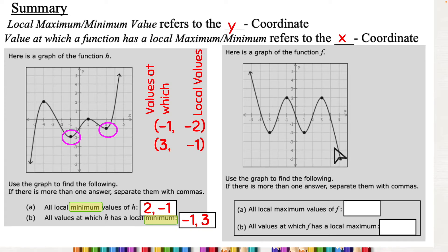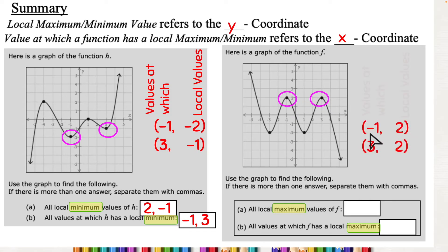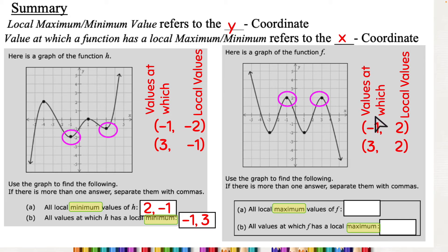Now it's asking for maximums, so I'm not looking for the bottom points anymore — I'm looking for the top points. There are two top points, so I'll list those coordinates. I have negative one and two, and three and two. Values at which are my x-coordinates: negative one and three. Local values are my y-coordinates: just two, since both top points share the same y-coordinate.